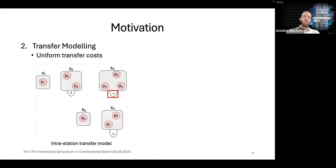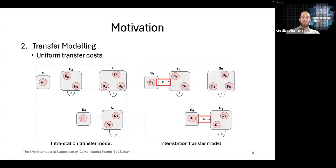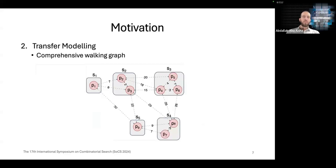Most existing algorithms model transfers using uniform transfer costs whether within stations or between nearby stations and this often leads to infeasible or suboptimal journeys. Some other works use comprehensive walking graphs where all pairs of stops are somehow connected in the network and unfortunately this leads to costly pre-processing and slow queries.